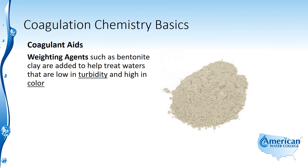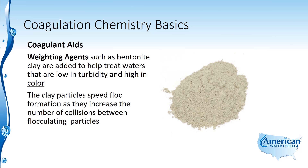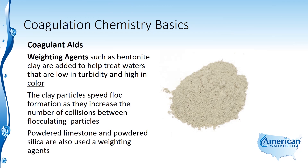Weighting agents such as bentonite clay are added to help treat waters that are low in turbidity and high in color. The coagulation and flocculation process actually works better on waters that are high in turbidity, so if turbidity is low you can add artificial turbidity in the form of bentonite clay or other weighting agents to also help remove color. The clay particles speed floc formation by increasing the number of collisions between flocculating particles — particle collision is key, which is why we need appropriate mixing energy in the flocculation process. Powdered limestone and powdered silica are also used as weighting agents.